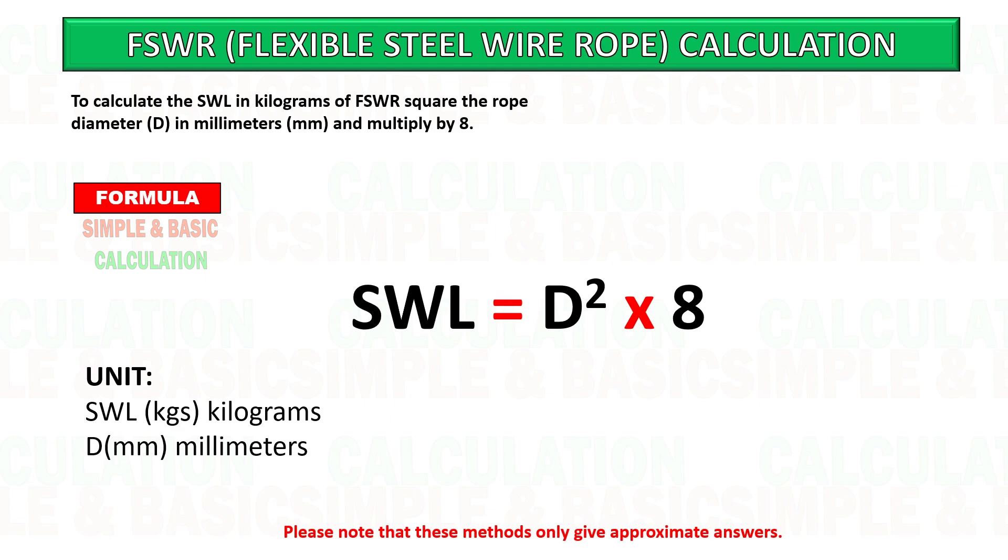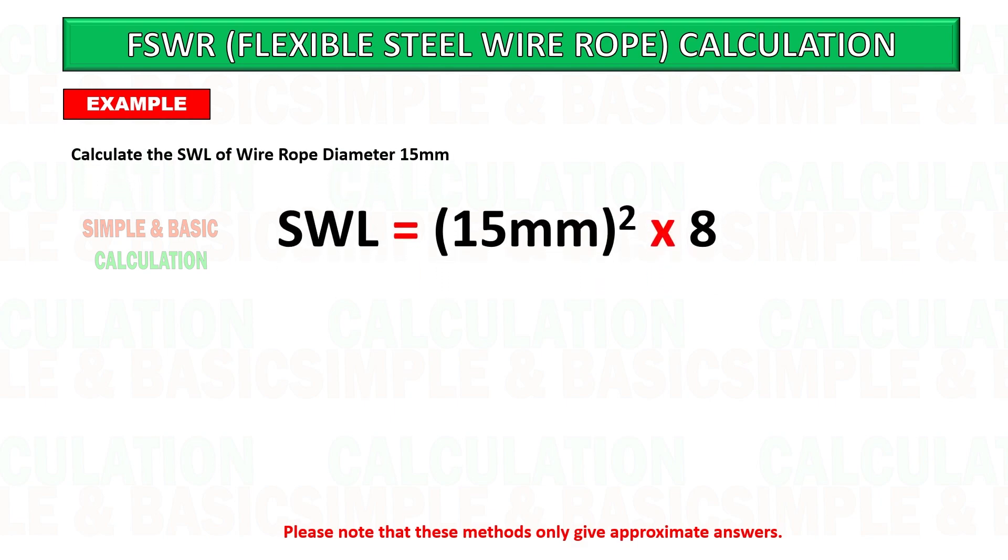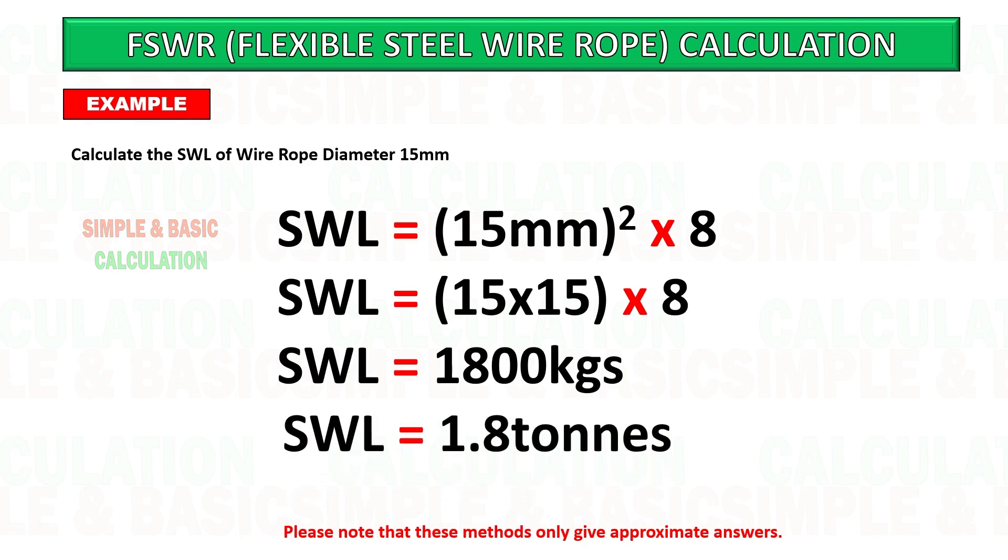Example number one: calculate the safe working load of wire rope diameter 15 millimeter. Based on the formula given, you can start to calculate the safe working load of the given diameter of wire rope.